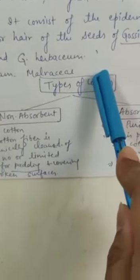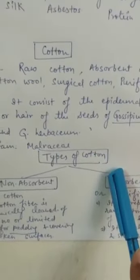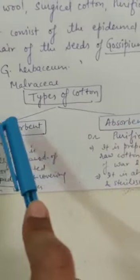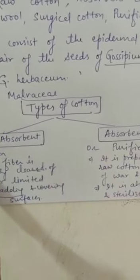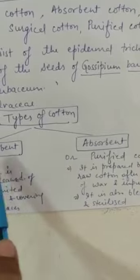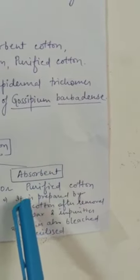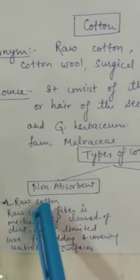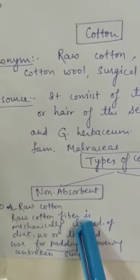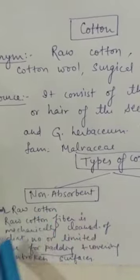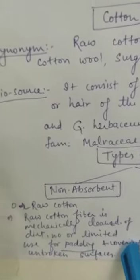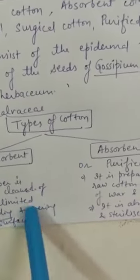Now types of cotton. Cotton is of two types: non-absorbent and absorbent. Non-absorbent cotton is also called raw cotton. Raw cotton fiber is mechanically cleaned and has no or limited use in padding and covering of unbroken surfaces. We do not apply raw cotton in dressings.